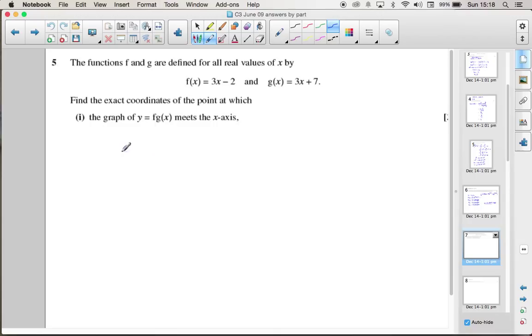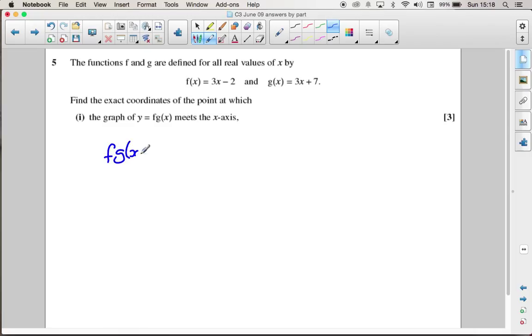So we need to find f of g of x first. And that's when, in f of x, when we get an x, we substitute what we've got for g of x. So f of g of x is going to equal 3 lots of x, but x is going to be 3x plus 7, minus 2.